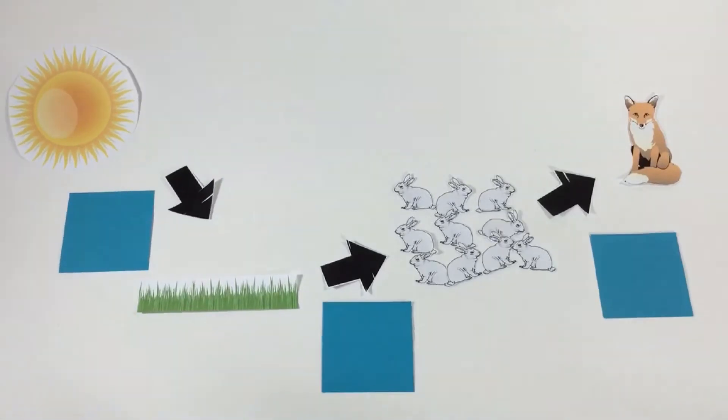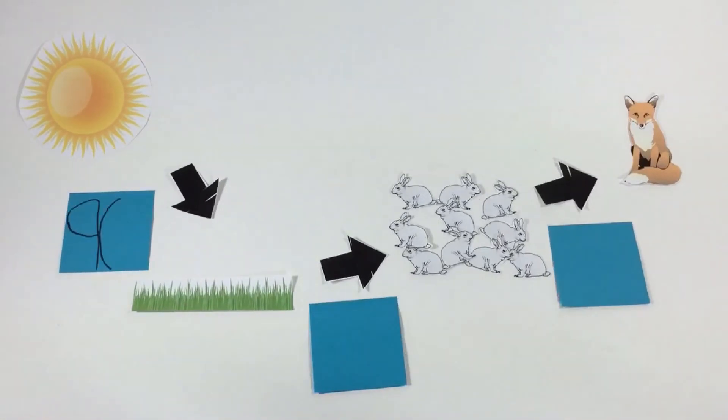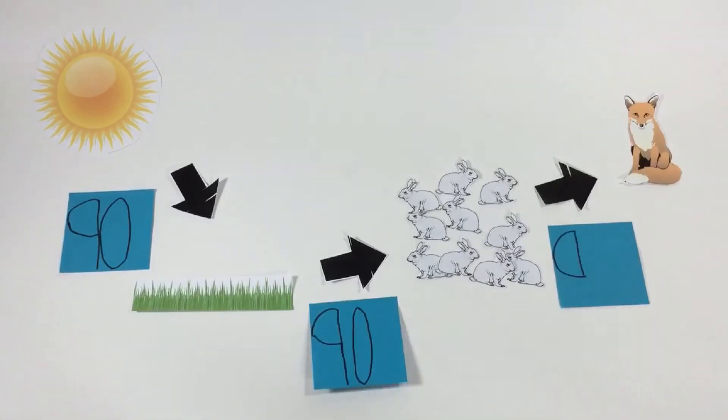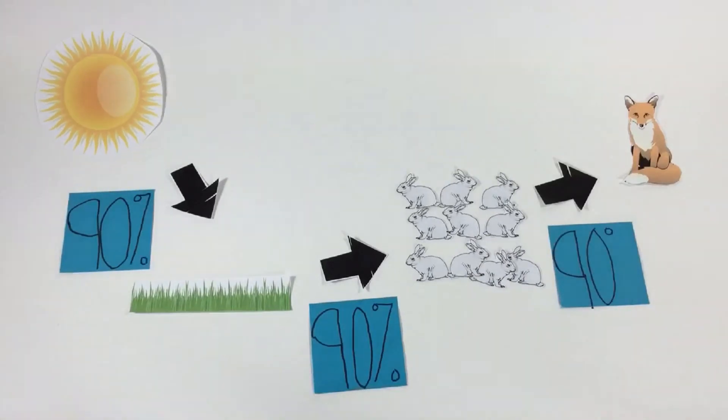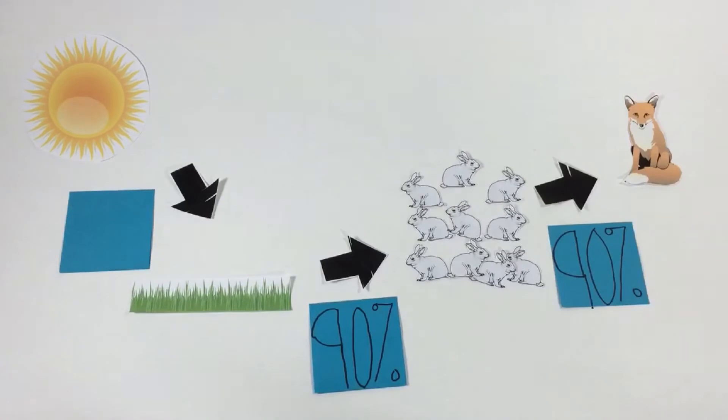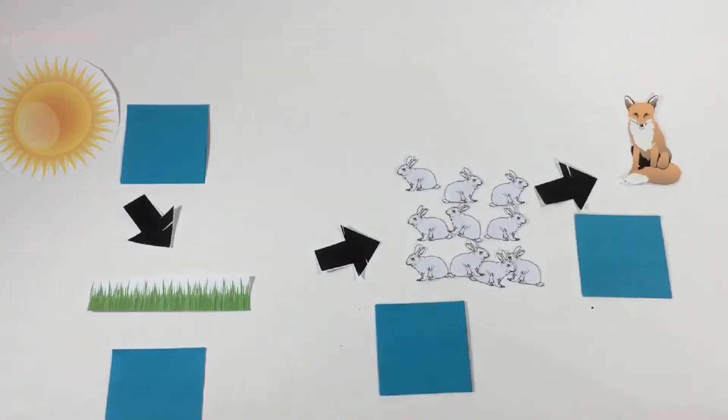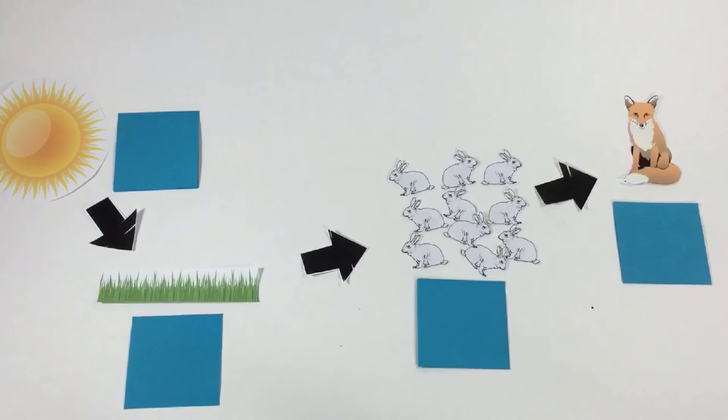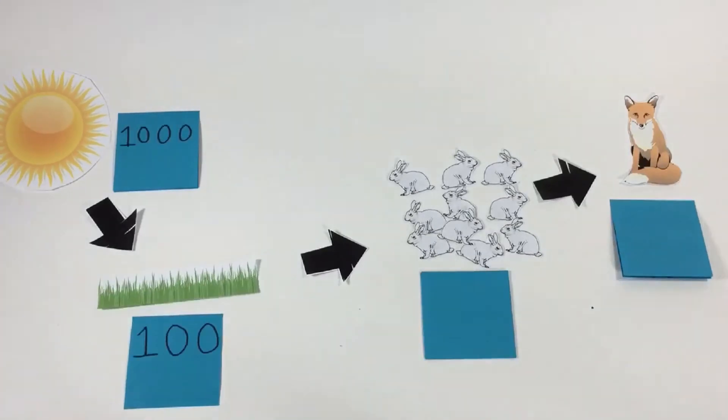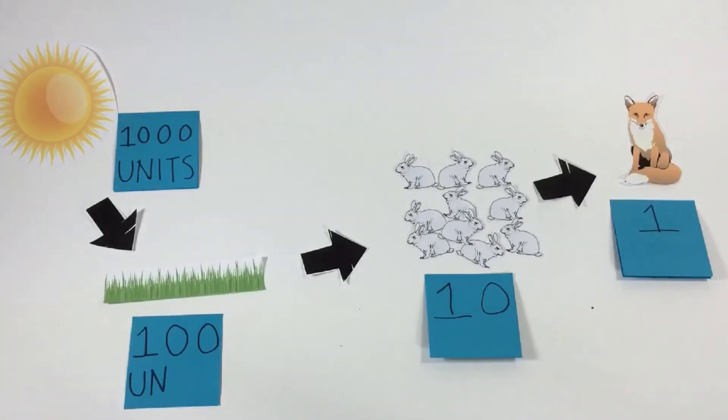See, each time you go up a level in a food chain, 90% of the energy from the previous level is lost. If there were 1,000 units of energy in the sun, there will be 100 units of energy in the grass. From those 100 units in the grass, just 10 rabbits can be sustained.